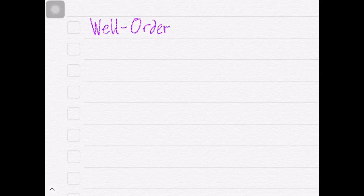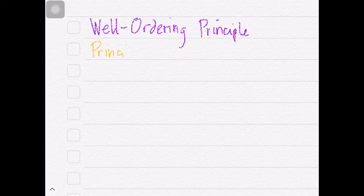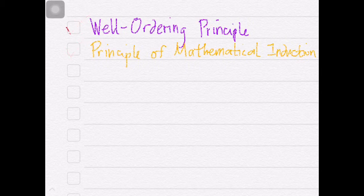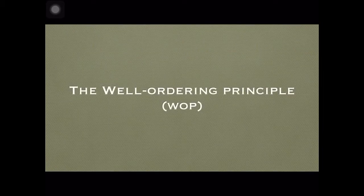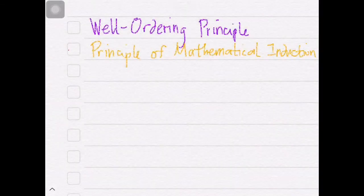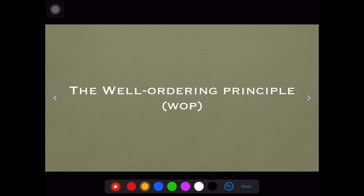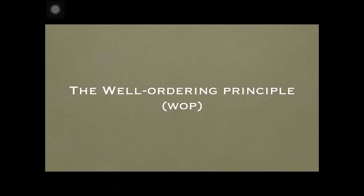We have two properties which neither the set of rational numbers nor the set of real numbers can claim. One of those two properties will be the well-ordering principle, or WOP. I'll be having another video that will talk about the other property, which is the principle of mathematical induction. The principle of well-ordering or WOP is only valid for the set of integers and not for the rational numbers nor for the real numbers, unless by lucky coincidence.